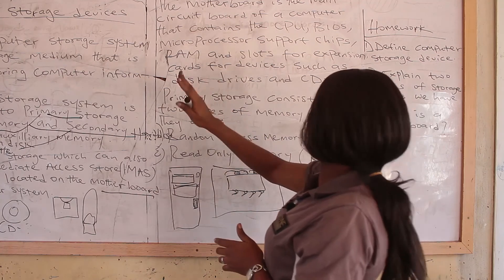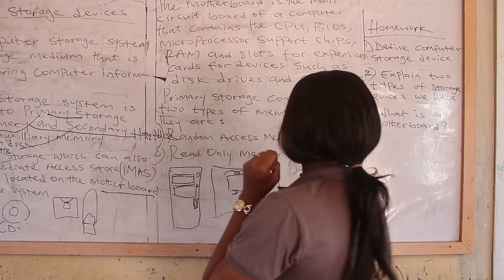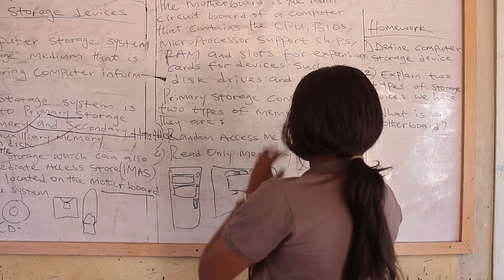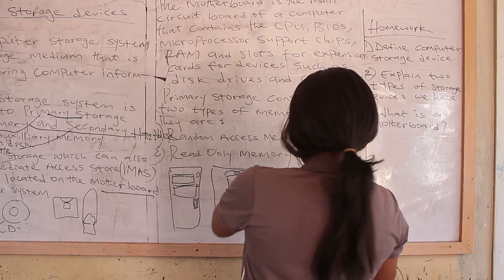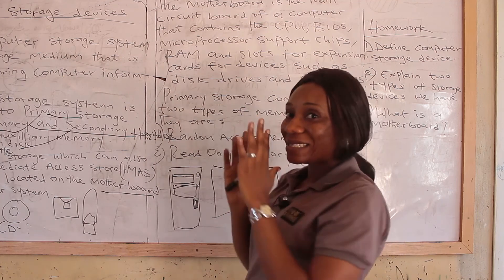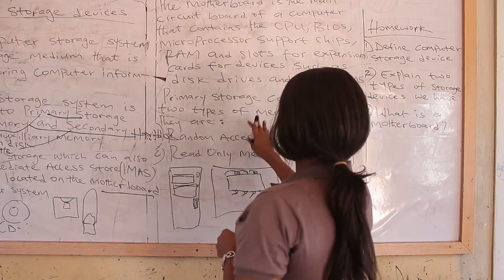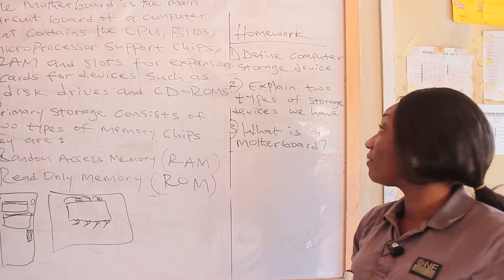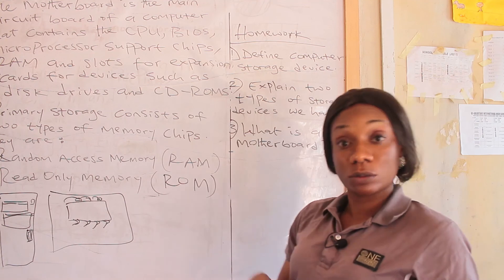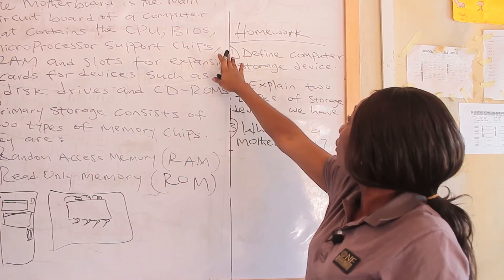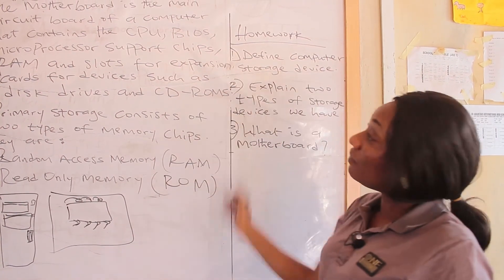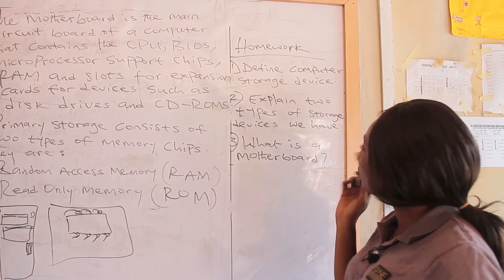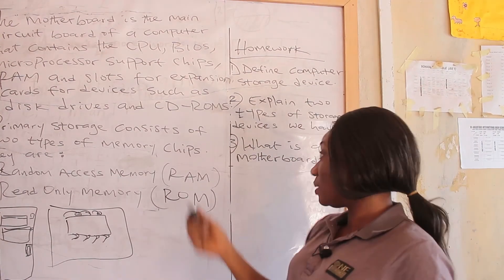The primary storage consists of two types of memory chips: the random access memory, RAM, and the read only memory, ROM. In our next class, we'll be looking at the RAM and the ROM. Now I have assignments for you. Number one: define computer storage device as I taught you. Number two: explain the two types of storage devices we have.